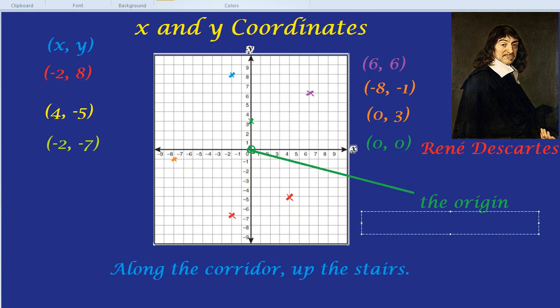Okay. I kind of lied when I said that was the last one. I'm going to do one more. How about (-6, 0). Where is that coordinate? Okay. We start off at the origin as always. And we go along the corridor this way because it's minus. So here we are at -6. And how far up the stairs do we go or down the stairs? We go 0.